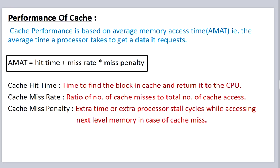Cache hit time is the time to find the block in cache and return it to the CPU. Cache miss rate is the ratio of number of cache misses to the total number of cache accesses. Cache miss penalty is the extra time or extra processor stall cycles while accessing next level memory in case of cache misses.